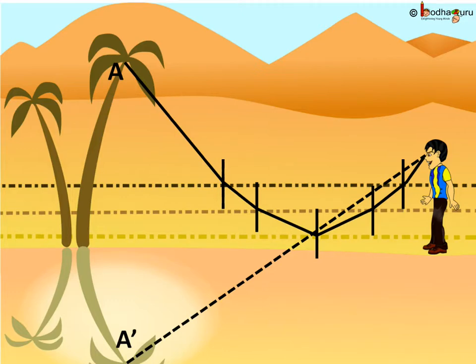Now imagine a ray of light coming from the top of a tree, say a coconut tree. As it moves from denser to rarer medium, it bends away from the normal. So at some point the angle gets greater than the critical angle and it gets reflected.